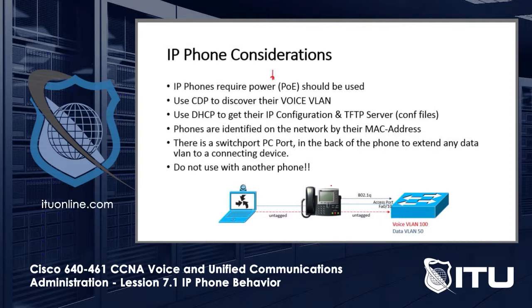Phones can get their power from the switch, from a power injector, or from a power cube. The power injector connects a non-powered interface to the phone and goes to a wall outlet. The power cube plugs directly into the wall from the phone. With the power injector, you can place it further from the phone — for example, closer to the switch if a power outlet is nearby. But the ideal solution is PoE — power over Ethernet — powered by the switch.